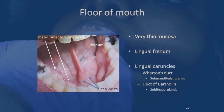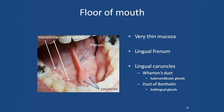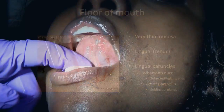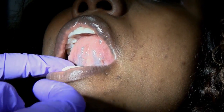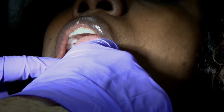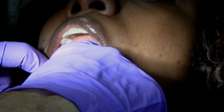We'll then look underneath the tongue by asking the patient to stick their tongue to the roof of their mouth. We note the underside of the tongue — very thin mucosa, so we can see a lot of vasculature there. We can also note the lingual caruncles, which house the exits from the submandibular and sublingual glands, known as Wharton's and Bartholin's ducts.